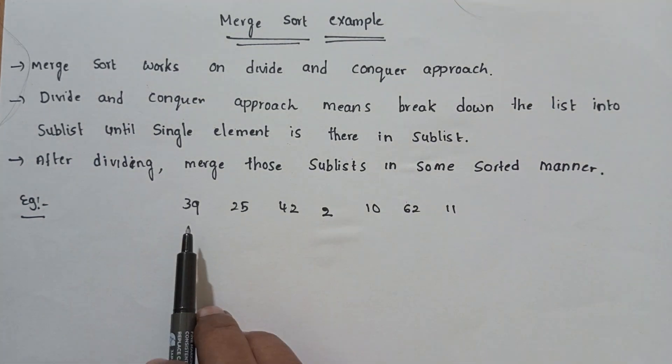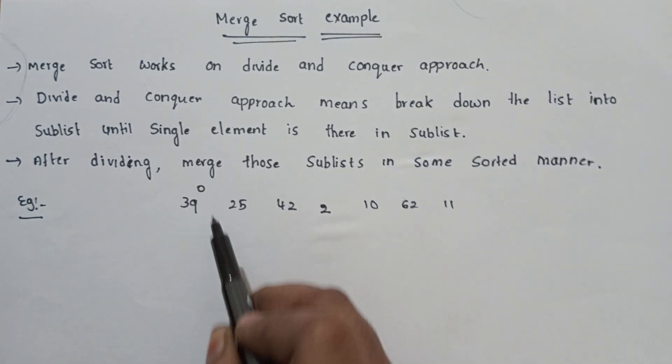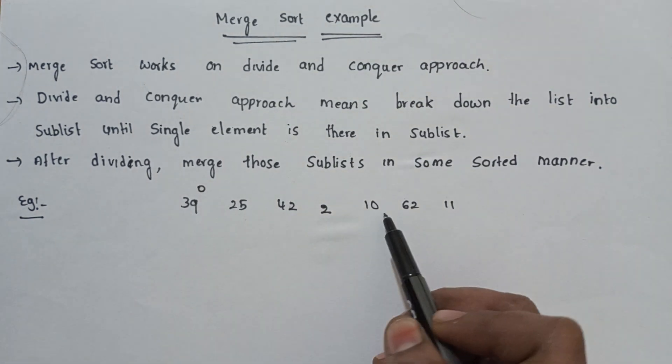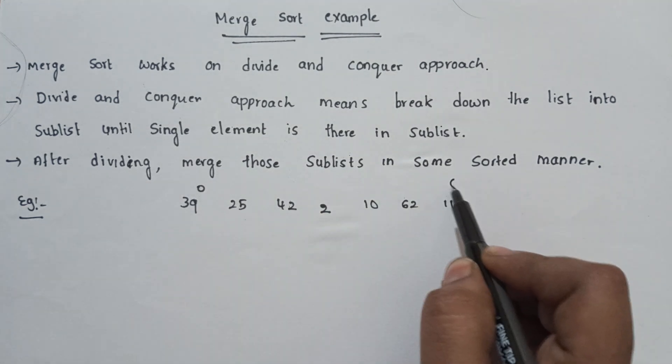So this is our example unsorted array. The size is index 0, 1, 2, 3, 4, 5, 6. Total 7 elements are in array index 0 to 6.